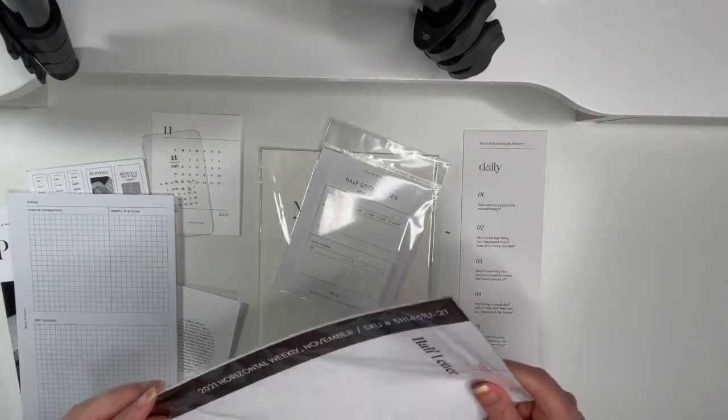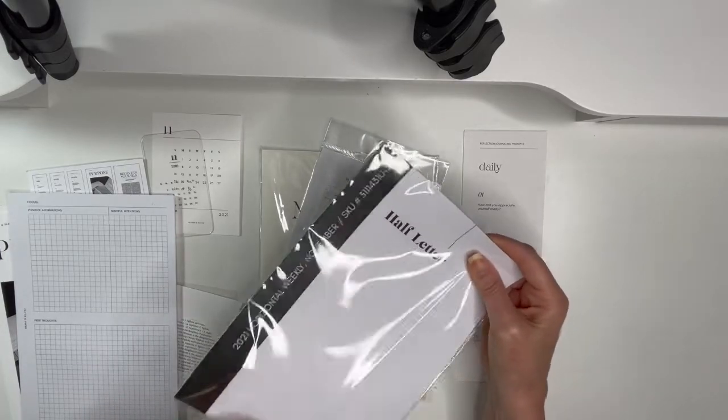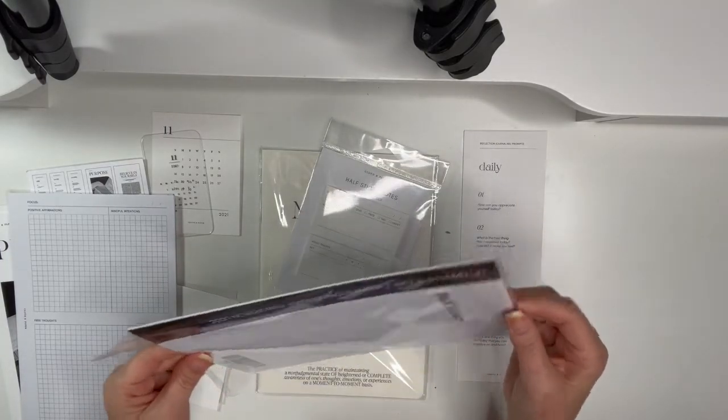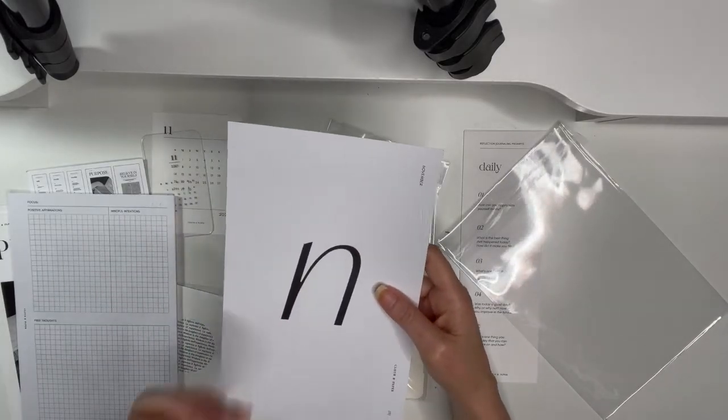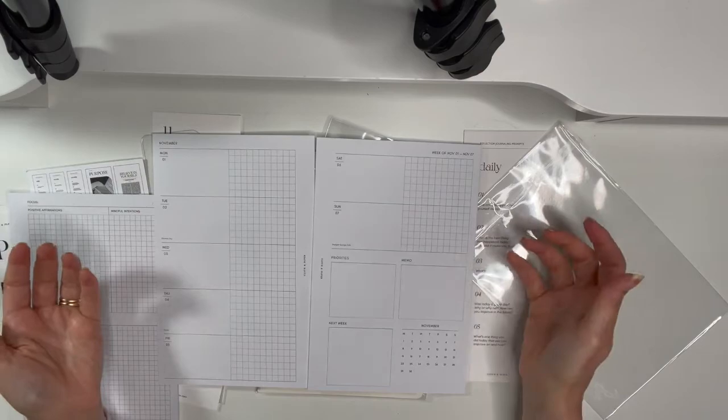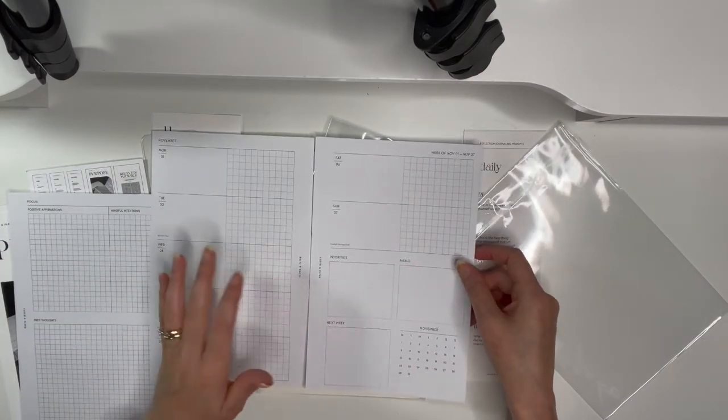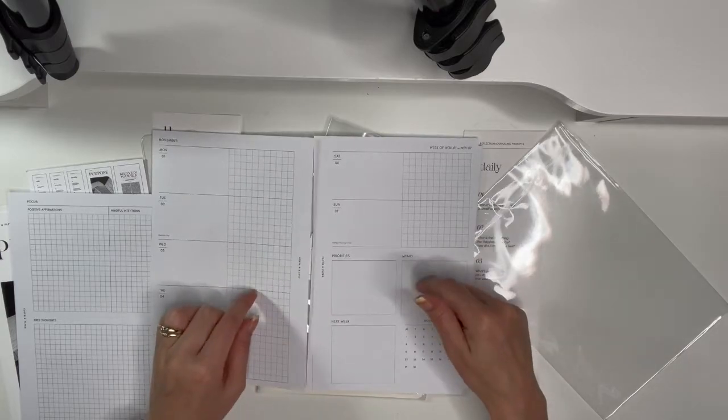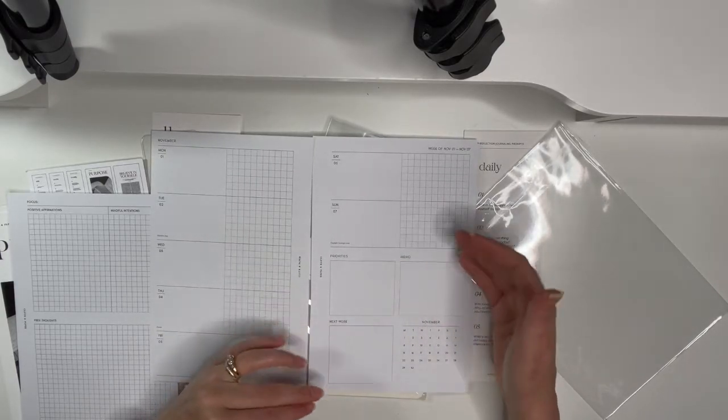And then we have the November, which you guys, I don't use these. It's nice for those people who are die-hard Cloth and Paper users like for the inserts and I love these. I just wish they were undated. I get why they're doing it because this is what they're releasing for 2022. So I guess they give us the last six months of the year.